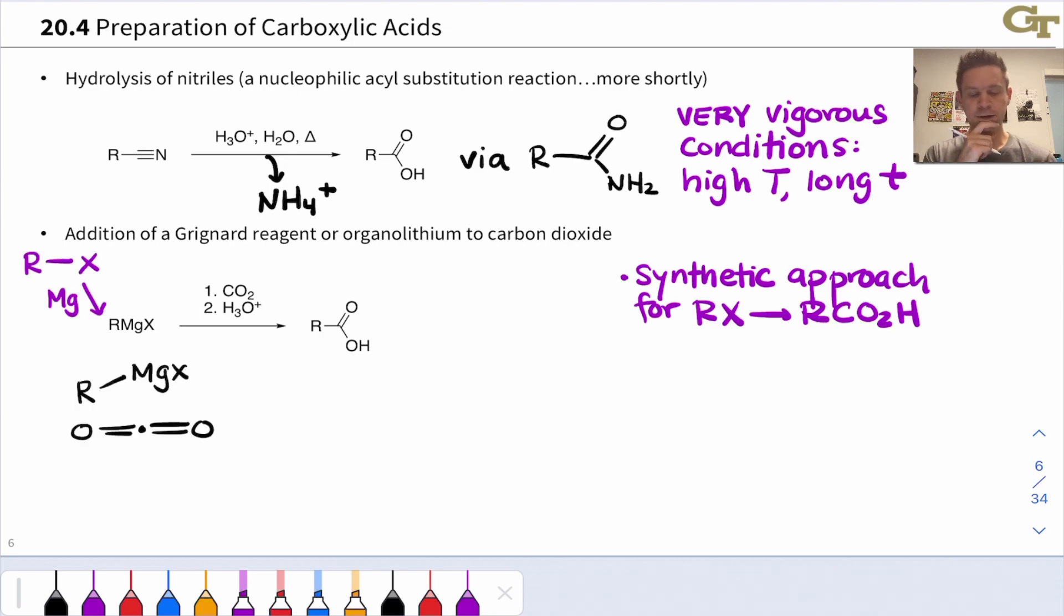We know we can make a Grignard reagent by treating an organohalide with magnesium metal, typically in an ethereal solvent like THF or diethyl ether. That Grignard reagent is nucleophilic at the R group. Carbon dioxide, CO2, is a great electrophile at the central carbon. Think of it as a carbonyl carbon twice. It's a carbon sharing two carbonyl-type oxygens with two CO double bonds, so it's a great electrophile.